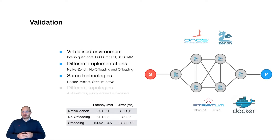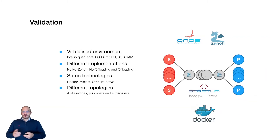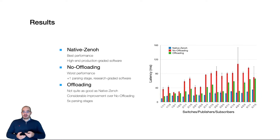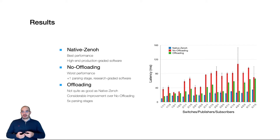The results show that native Xeno has the best performance, but they also highlighted the potential of the offloading mechanisms. We targeted different topologies by varying the number of switches, publishers, and subscribers. Native Xeno still has the best performance — let me remind you that this is high-end production-grade software. Still, although the offloading case is not as good as native Xeno, it showed considerable improvements over the no-offloading case. It has several parsing stages, which makes this one of the most demanding tasks for the software switching implementation we relied on.